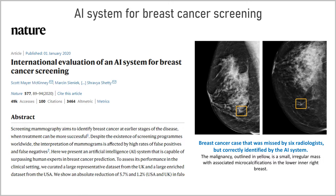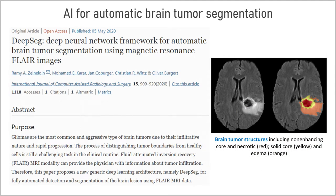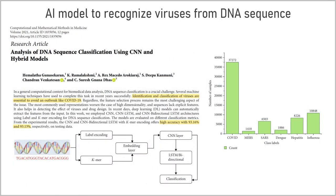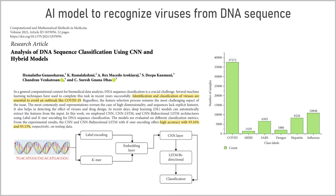It doesn't mean that an AI system is always better than a human expert in every case, however it helps to significantly reduce prediction errors. The next example shows an AI system for automatic brain tumor segmentation using magnetic resonance images. The process of distinguishing tumor boundaries from healthy cells is a challenging task in clinical routine. This new AI system can accurately recognize tumor structures and boundaries and can provide important help during brain surgery. The last example presents an AI model to recognize viruses from their DNA sequence, and in particular to identify COVID-19.